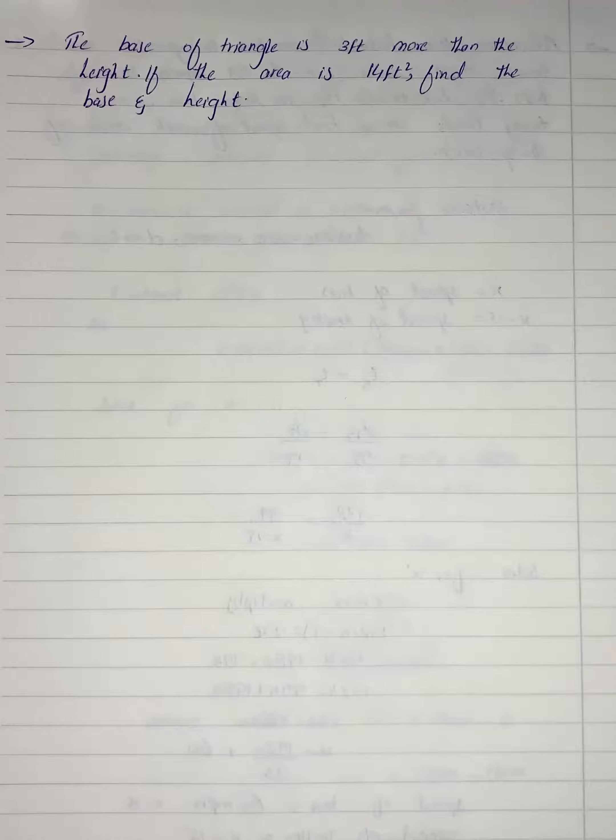Here we have a question that says the base of a triangle is 3 feet more than the height. If the area is 14 feet square, find the base and the height. So we know the area of a triangle with base b and height h.